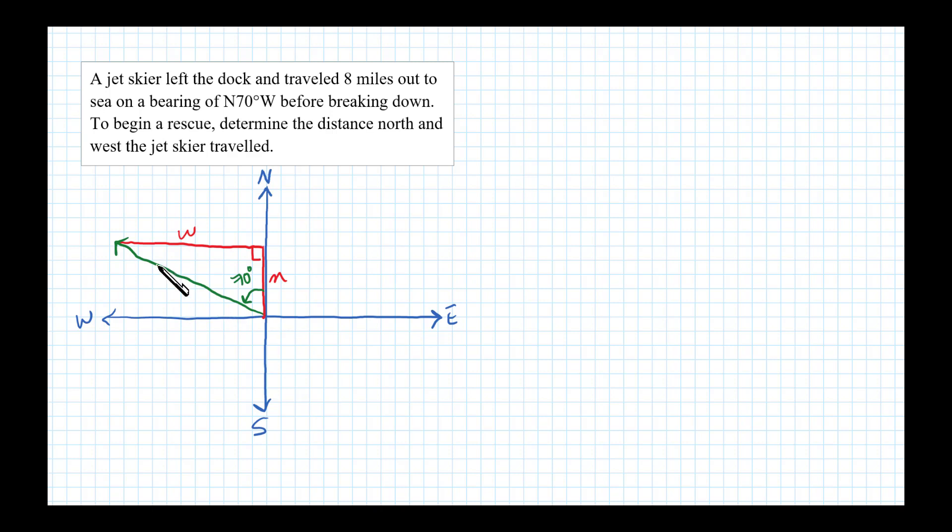Now remember the distance the jet skier went out was eight miles, so I'll label this hypotenuse here with an eight. Okay, now with this we can see that w is the side opposite of this 70 degrees, so I'm going to use sine.